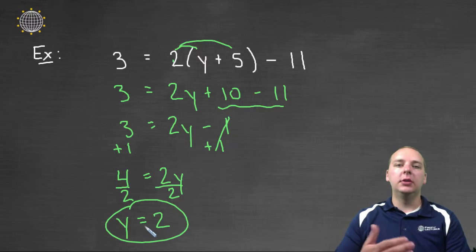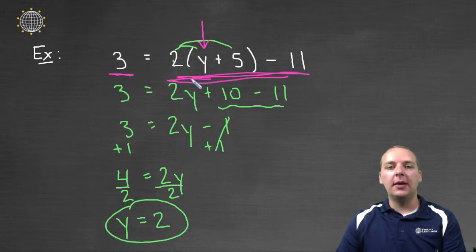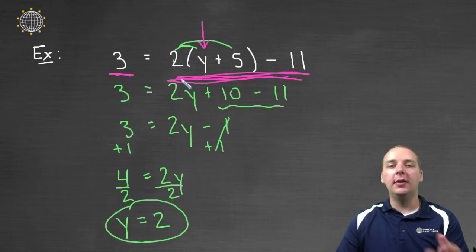2 is the solution to this linear equation, and what that means is you should be able to take 2 and plug it back in any variable, like y in the original equation, and it should make the left side really match the right side. And I'm not going to do this for all the examples, but I'll at least do it for the first one.